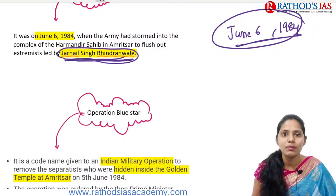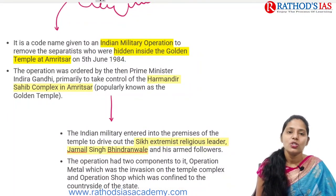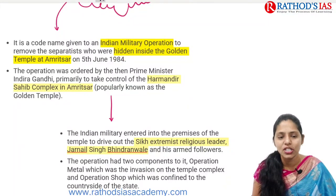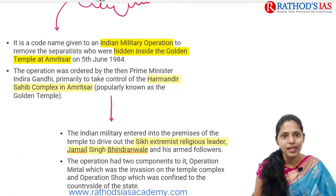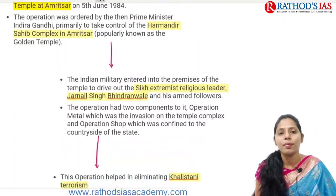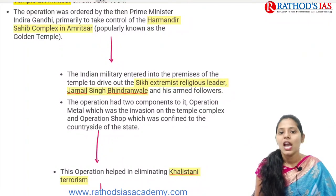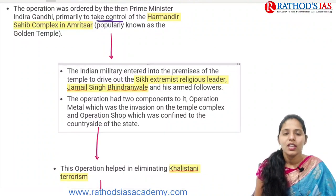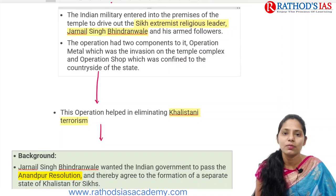Bindranwale mainly led an extremist group and started the Khalistan movement. Operation Blue Star is the code name given to an Indian military operation to remove separatists who were hidden inside the Golden Temple in Amritsar. This operation was mainly ordered by the then Prime Minister Indira Gandhi, primarily to take control of the Golden Temple complex.